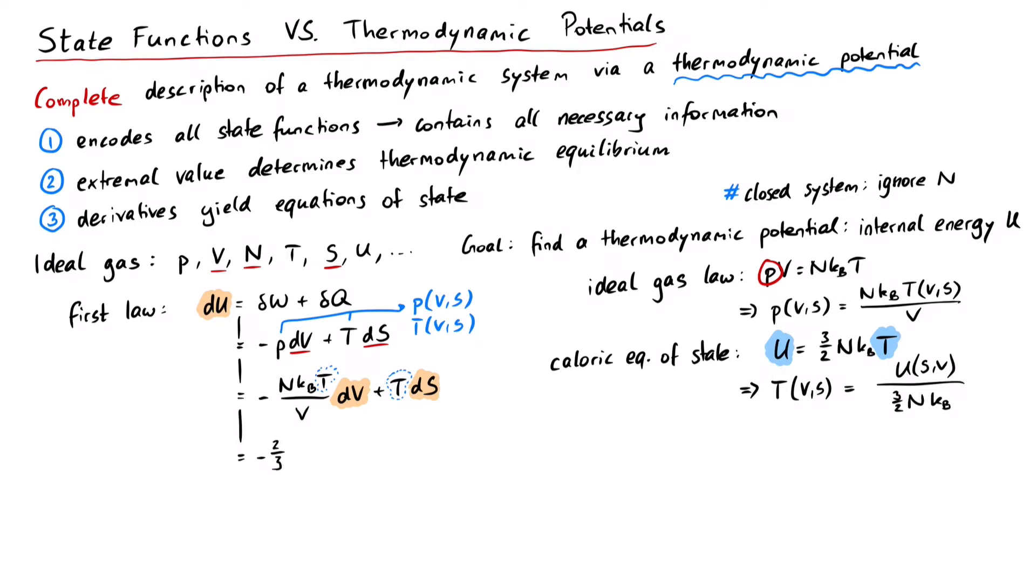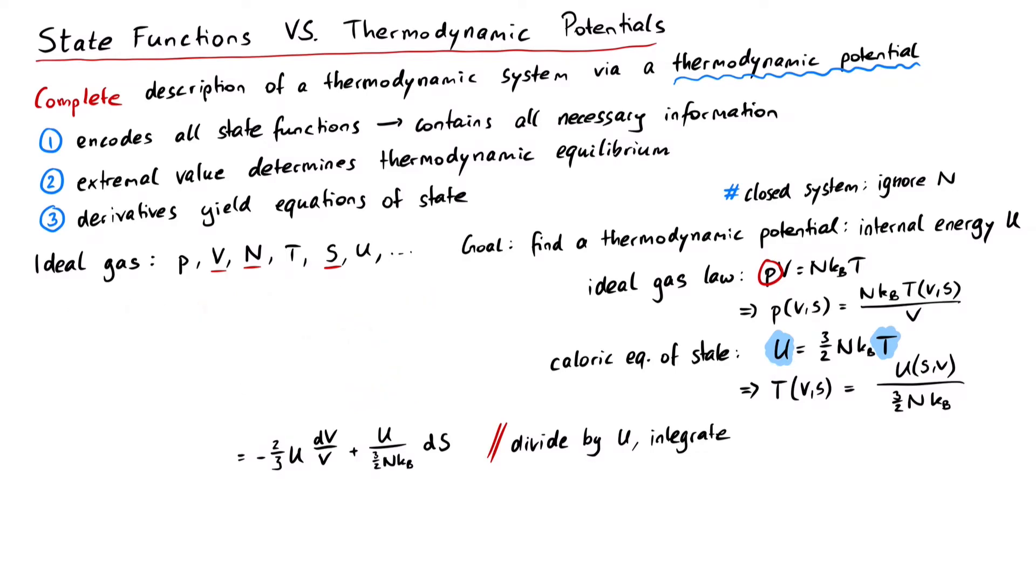Keeping that in mind, we can express temperature as u divided by 3 halves nKB. Now we would like to calculate the thermodynamic potential U. This is a rather simple process by separating variables and then integrating. Separation of variables is done after dividing by u, and integrating the left side yields the logarithm of u divided by some reference value, let's call it u sub 0.